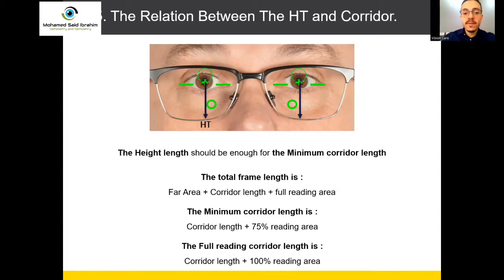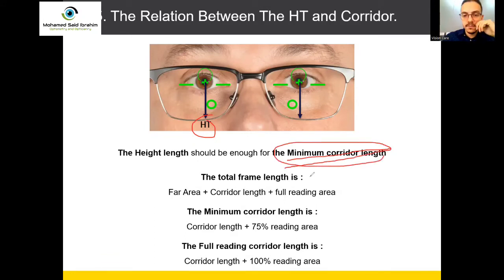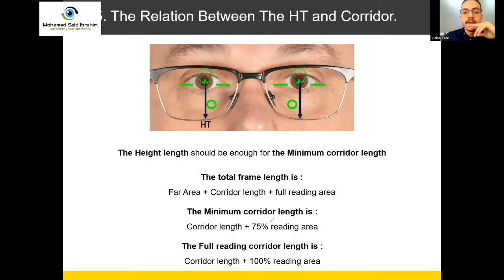The height of the customer should be enough — it should be more than the minimum corridor length. The full reading corridor length is the corridor length plus 100% of the reading area, which is around 5 mm. The total frame length is the far area plus the corridor length plus the full reading area.